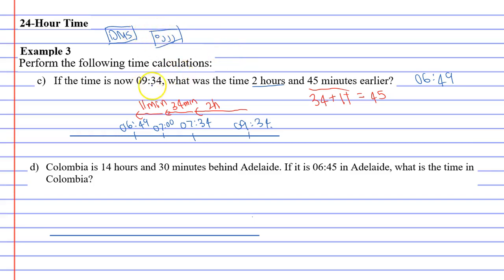What we do is we take the time 9.34, and we write it in our calculator by going 9 DMS 34 DMS. So essentially, we've just written 9 hours 34 minutes, and we're going to subtract 2 hours and 45 minutes. So we're going to go minus 2 DMS and 45 DMS.